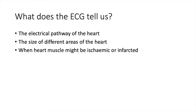First of all, it's important to understand what an ECG actually tells us. The heart has a plumbing system — the vessels, arteries and veins — and it also has an electrical aspect, which is the conductive pathway that helps the heart to effectively beat at a constant rate. If something goes wrong with the electrical pathway, we can detect this using an ECG.